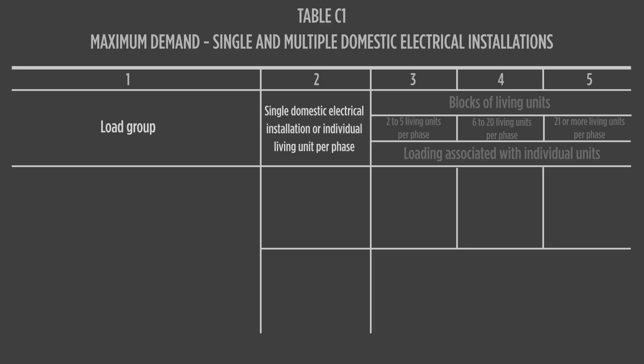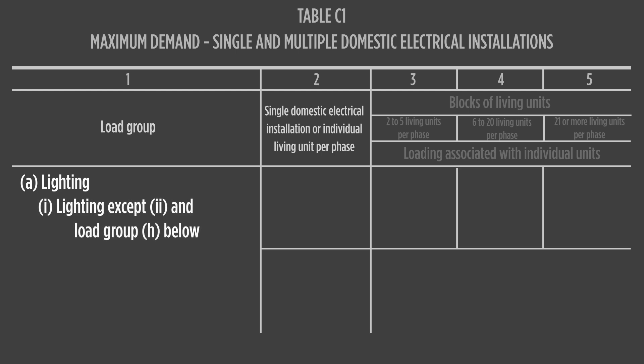In column 1 of each table, load groups are identified by lowercase letters. Some load groups will have subgroups to specify a particular load within that group and what loading applies to it. Small numbers in brackets may appear next to the load group. This directs the user to the statement in the notes attached to the table, which helps with interpretation.